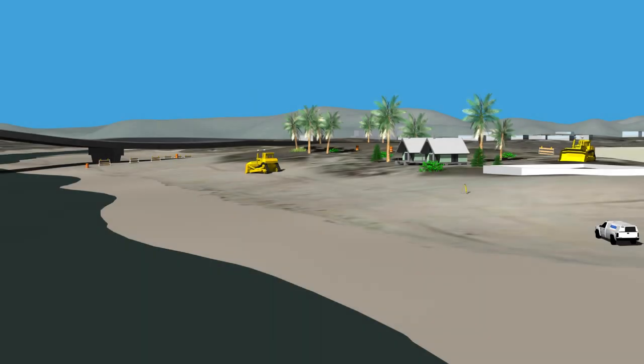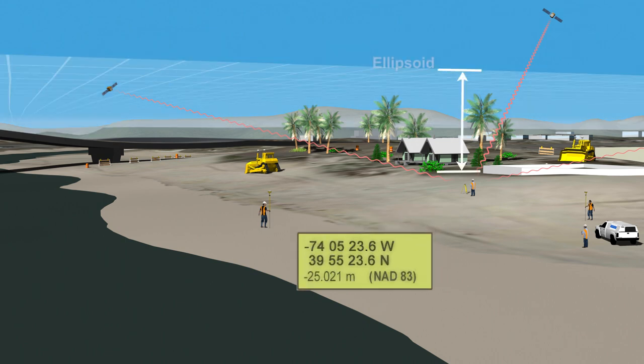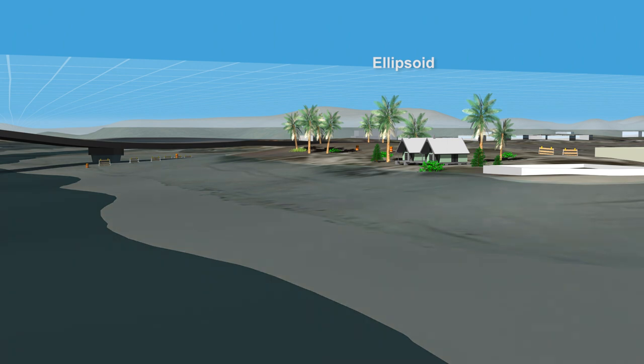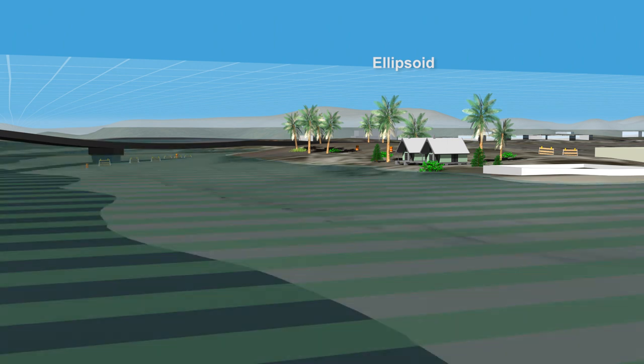Now, turning our attention to onshore construction. Before a new house is built, a surveyor needs to make sure the foundation is built above the high-risk floodplain. The surveyor uses professional GPS equipment to compute a highly accurate height of the ground, relative to the ellipsoid reference frame. Based on the survey, we know the base of our house is 25 meters below the ellipsoid. But what does that tell us about the floodplain? Unfortunately, ellipsoidal reference frames do not accurately represent topography or gravity.